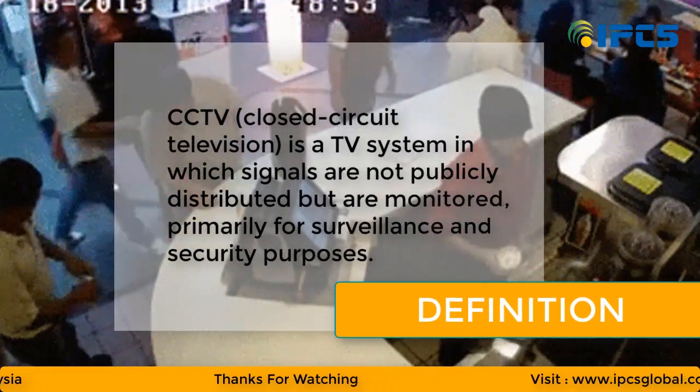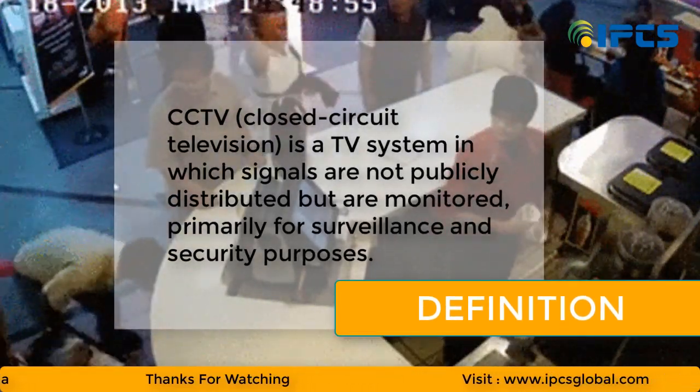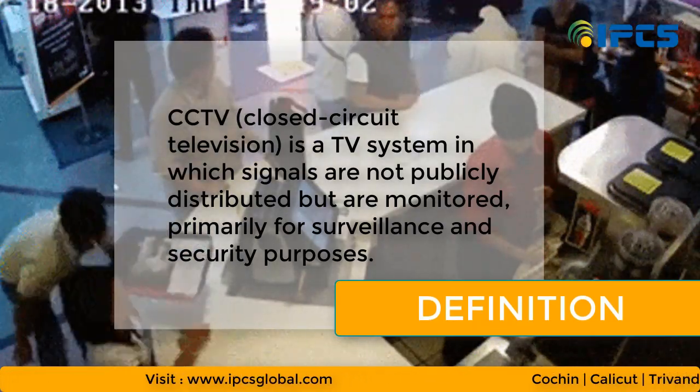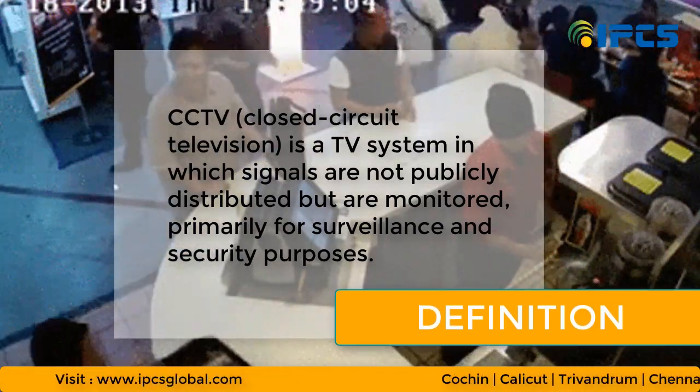We're looking at the CCTV systems. A2 is a primary element. They have CCTV systems in any office. They also have CCTV systems. If they have any issues, they can check the CCTV system.